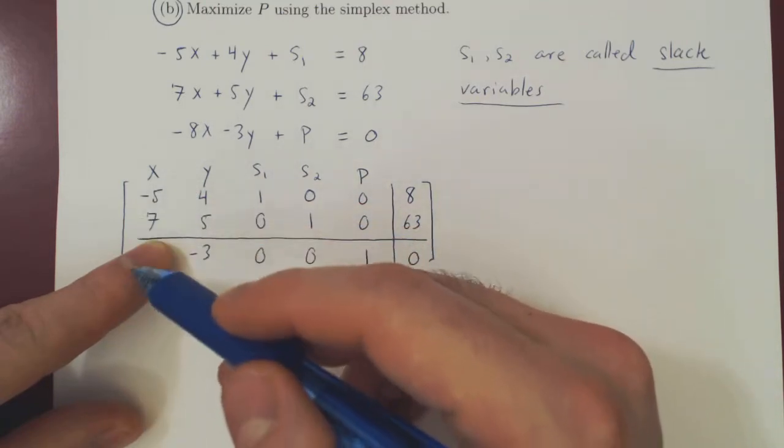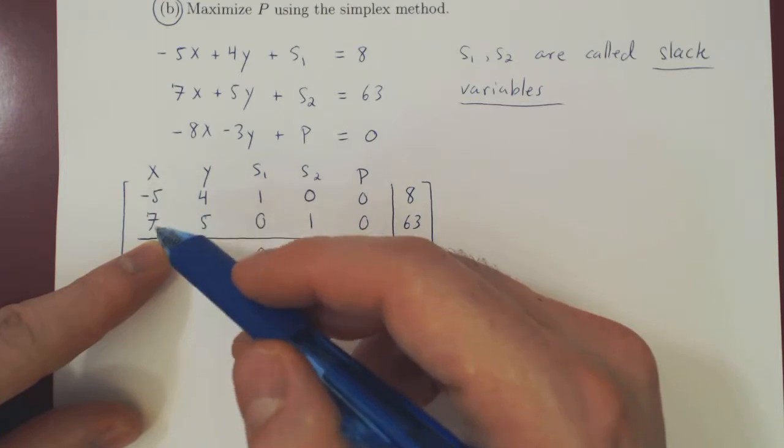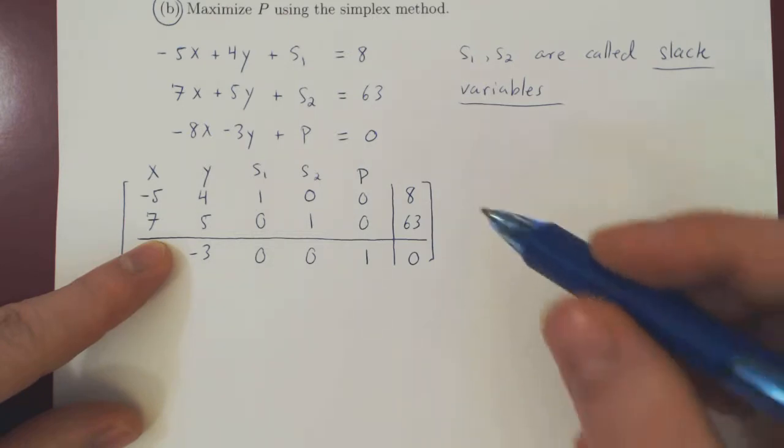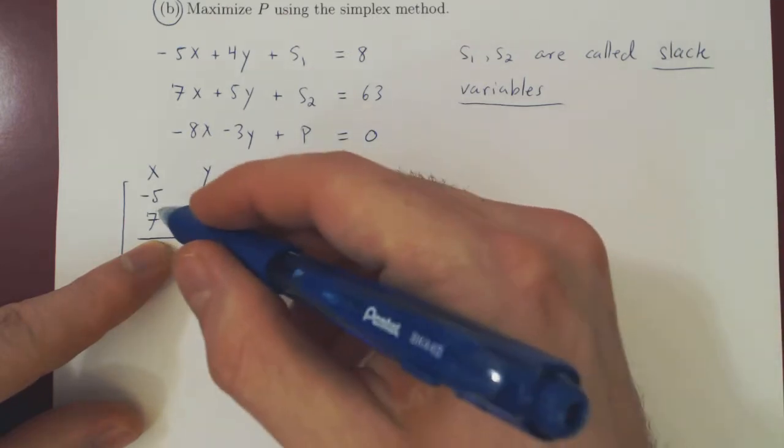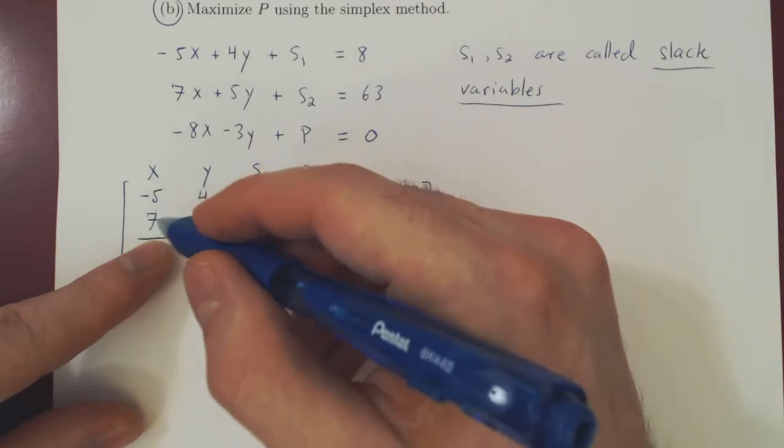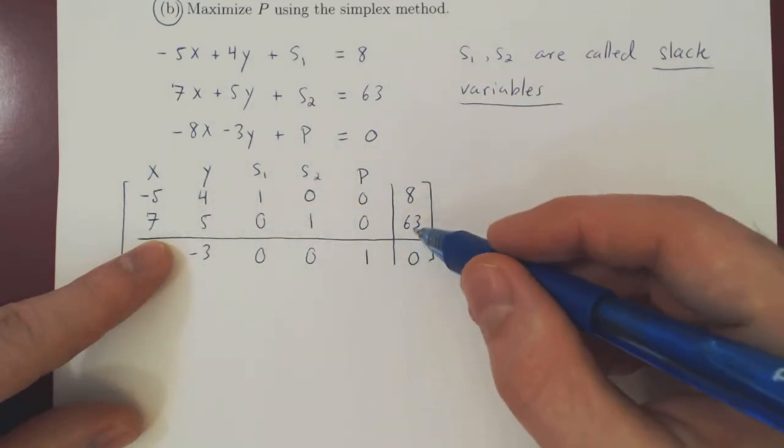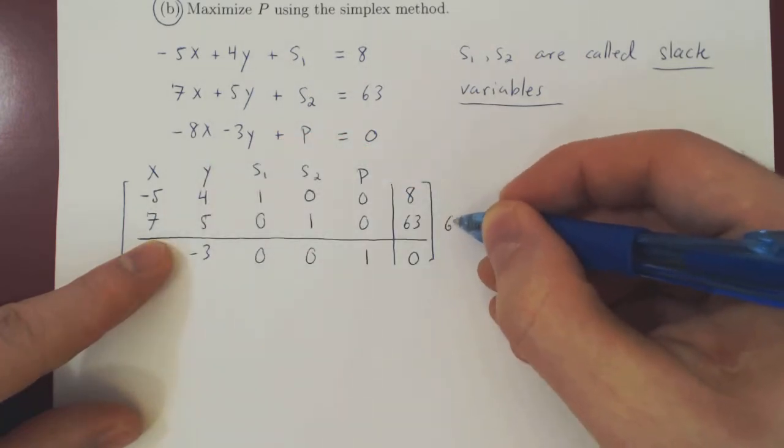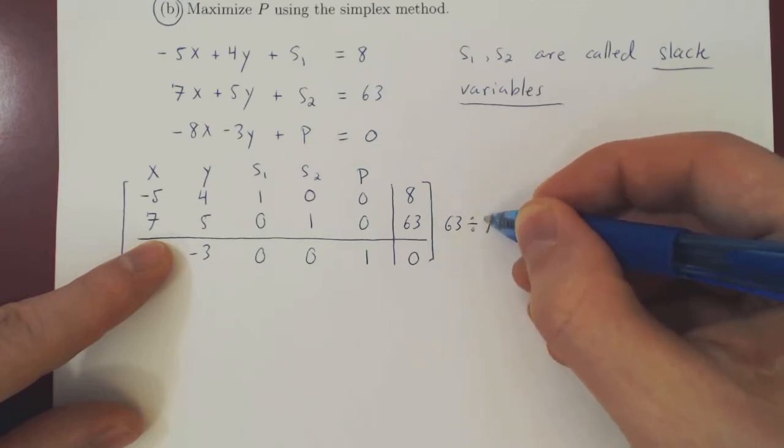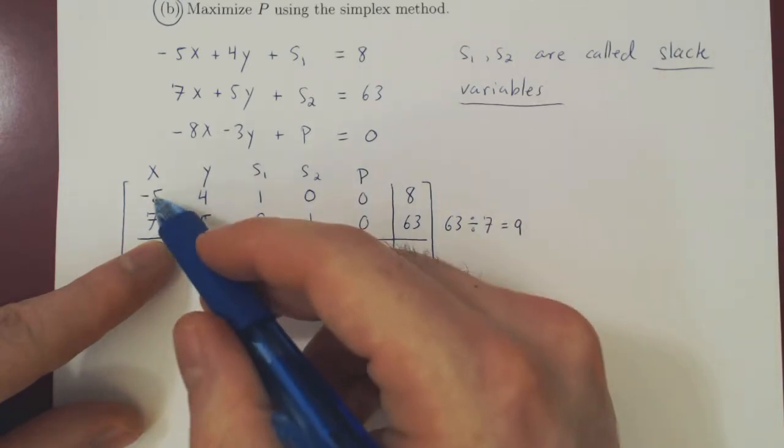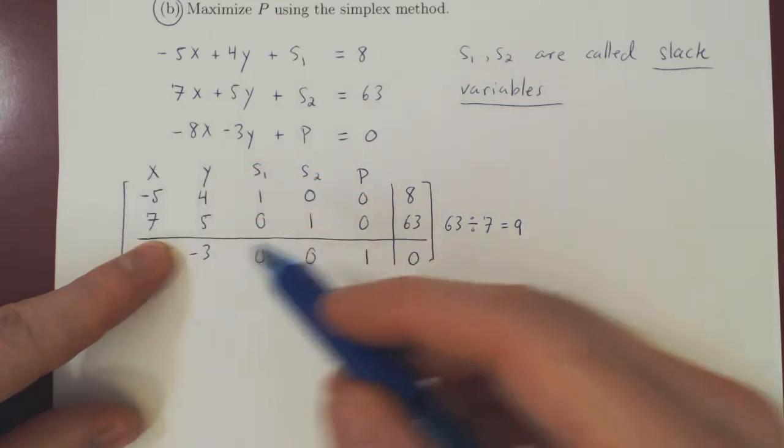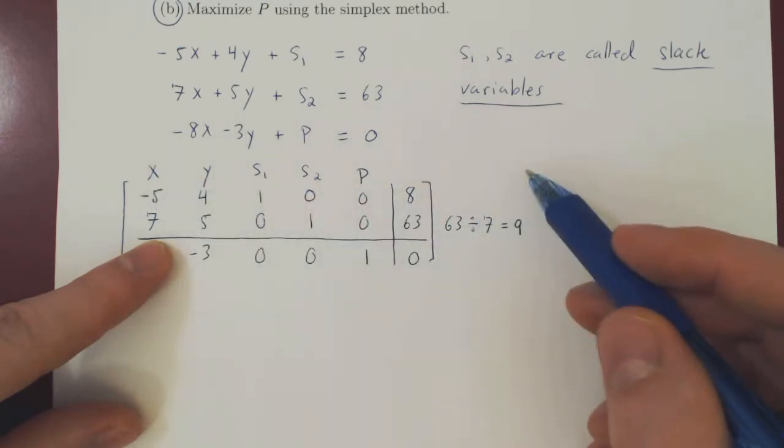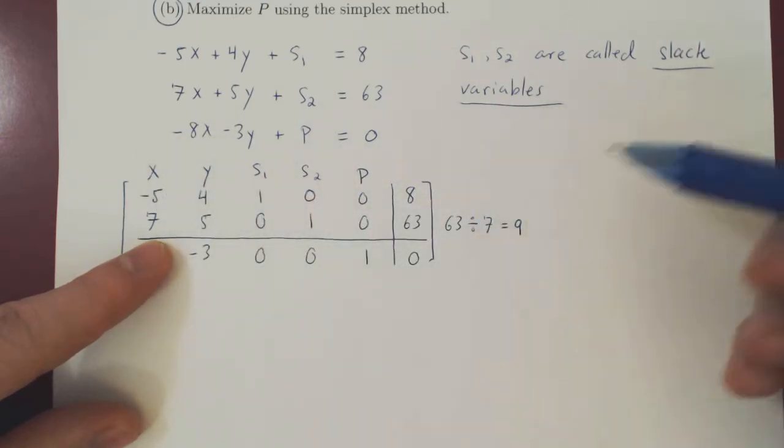We always pick the largest negative entry, then we ignore it and we consider the entries above it in the column. Then we only consider the positive entries, so we ignore negative entries. If we had more positive entries, we'd consider them as well. And what we compute for each positive entry in our column, here we only have one, we find the ratio of the constant term over the corresponding entry. So here we'd have 63 divided by 7, which would give us 9.